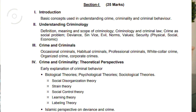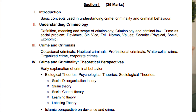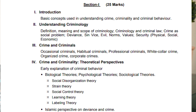Within the positivist and sociological theories, we discuss social disorganization theory, strain theory — specifically there are three or four branches of strain theory in this subject — social control theories, learning theory, labeling theory, and also the criminal justice system of Sharia.